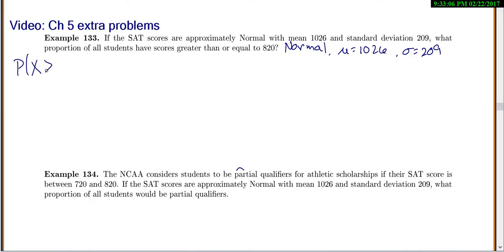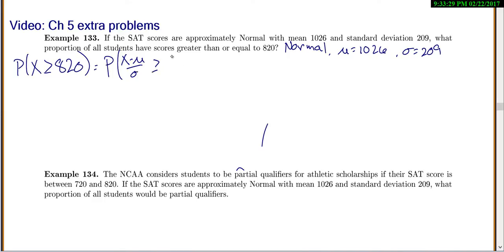So we're looking for the probability that we would get a score greater than or equal to 820. Anytime you're doing this, you always have to standardize. Instead of X, you do X minus mu over sigma. So we'll do 820 minus the mean of 1026 over the standard deviation of 209. Doing X minus mu over sigma turns it into a Z, your standard normal distribution.